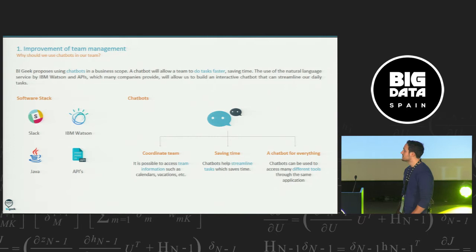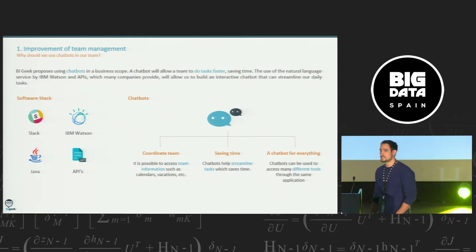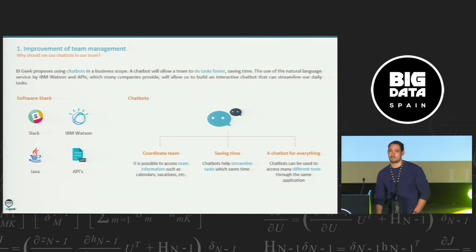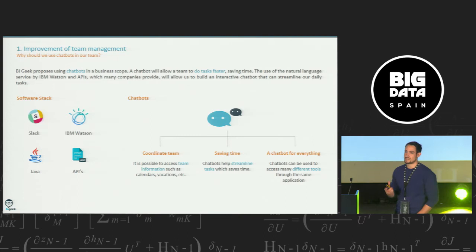In our company, for example, we have Google Calendar to schedule meetings and schedule tasks. We have Harvest to track our time. We have Calamari to apply vacations and so on. We wanted to propose the use of chatbots in a business scope. We wanted to create a chatbot as a main tool to control all these tools, all these softwares.